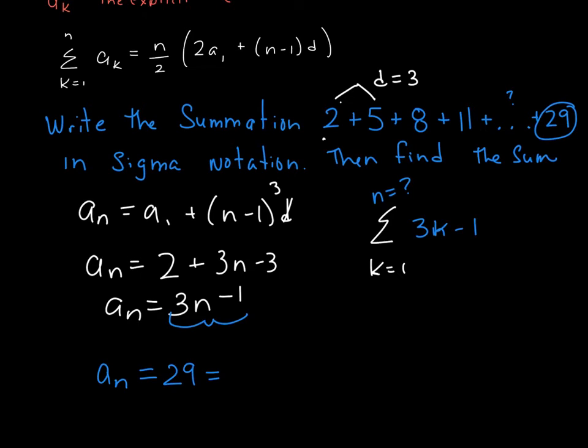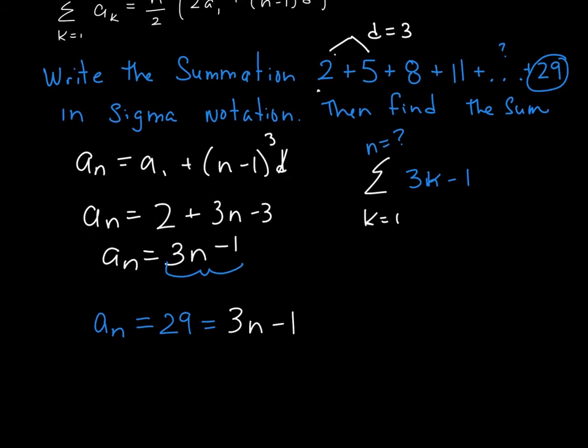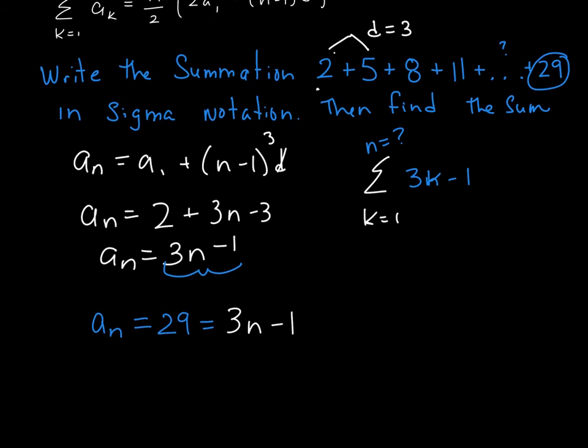So I know that I have 29 equals a1, a1 is still 2. From up here, everything stays the same. So I can actually just plug it into this formula. So I can say 29 equals 3n minus 1, because everything else stayed the same. Now I'm just solving for n. And I need to use the last term because the last term will tell me that n is the last term. So I add 1 to both sides and I get 30 equals 3n, or I have 10 terms in this summation.